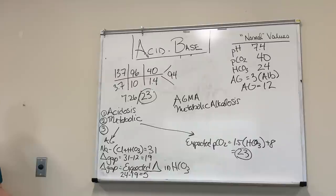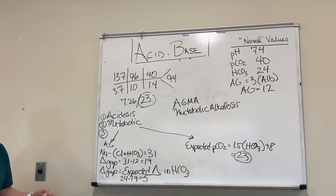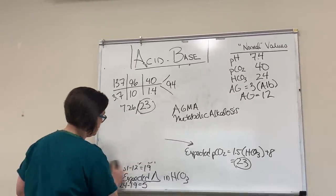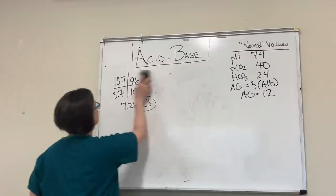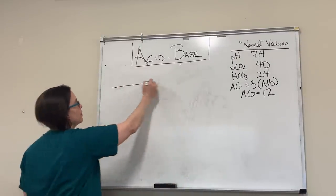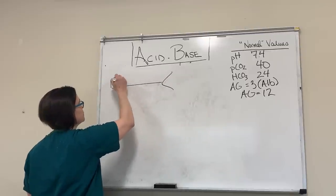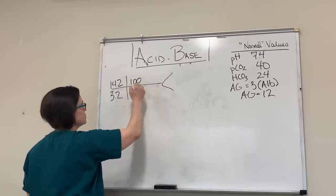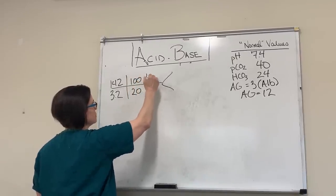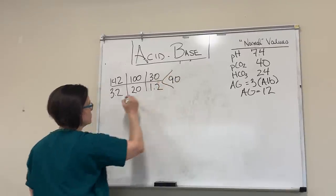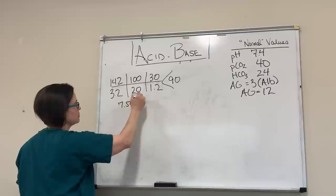We're going to knock out one more, and I'm going to teach you a quick trick. All we've talked about so far started as metabolic acidosis. Fourth case numbers: sodium 142, potassium 3.2, chloride 100, bicarb 20, PCO2 30, creatinine 1.2, glucose 90, pH 7.56, PCO2 22.